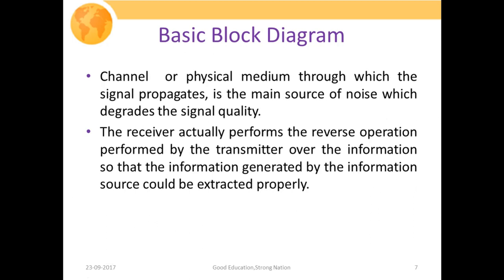The channel or physical medium through which the signal propagates is mainly the main source of noise, which degrades signal quality. There is lots of attenuation, distortion, and interference that actually happens in the channel. At last, the receiver performs the reverse operation of what the transmitter performed over the information, so that the information generated by the information source can be properly extracted and well understood by the receiver.